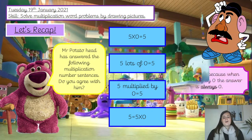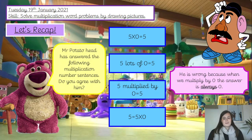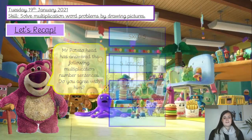Hopefully you said no, I don't agree with Mr Potato Head — he is wrong. Because when we multiply a number by 0, the answer is always going to be 0. Well done if you got that one right. Good job.